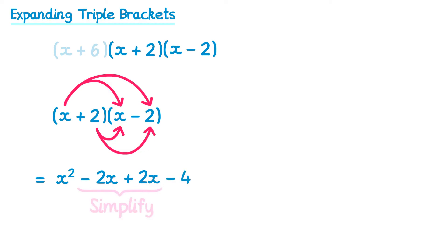We then come to simplify, and in this one the negative 2x and the 2x cancel out. This is because it's a difference of two squares, so we end up with x squared minus 4.